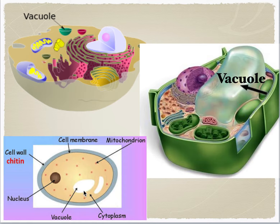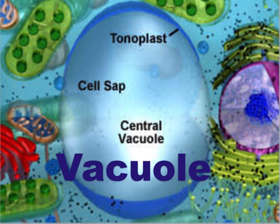It all depends upon the type of the cell and their function. The vacuole is basically filled with water containing some inorganic and organic molecules, including enzymes in solution. We call this fluid inside the cell sap.